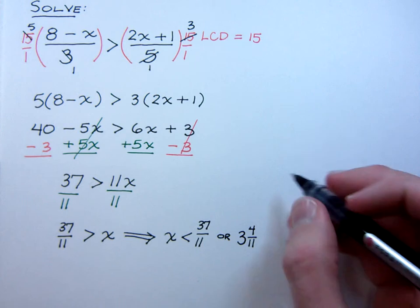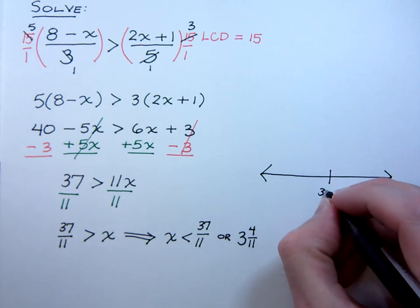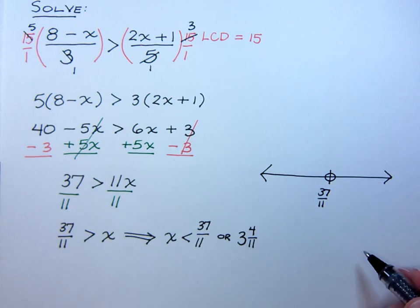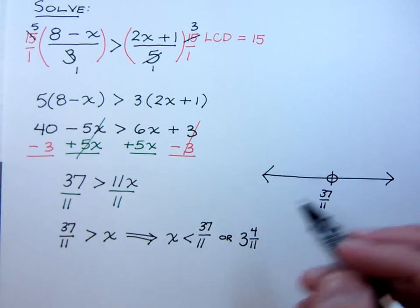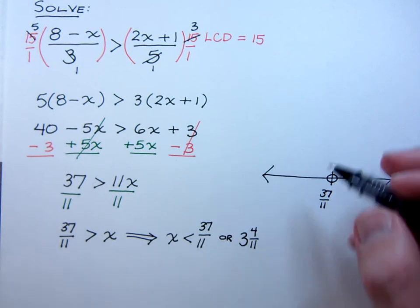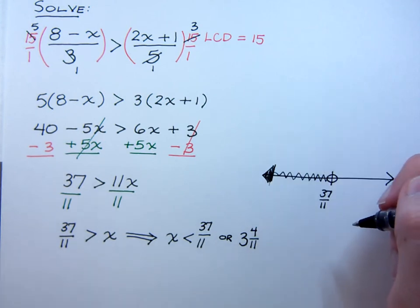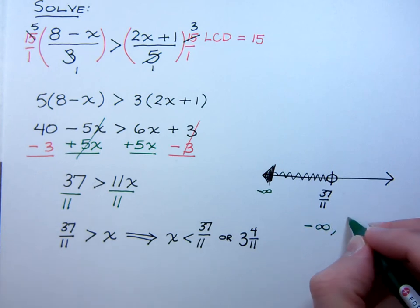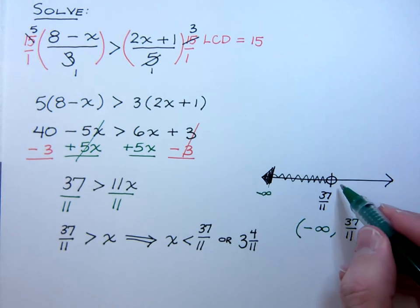So now we just need to turn this into a graph and then do the interval notation. So my number here is 37 over 11. Is it going to be open or closed circle on 37 over 11? Well, since there's no equal to part, it's just here it's greater than, we flip it around, it's less than. It's going to be open. And since it says x is less than, that means we're going to be shading out to the left. Just like that. So my interval notation coming from negative infinity to 37 over 11. Parentheses on the negative infinity, parentheses on 37 over 11 because it's open circle and we're not including that.